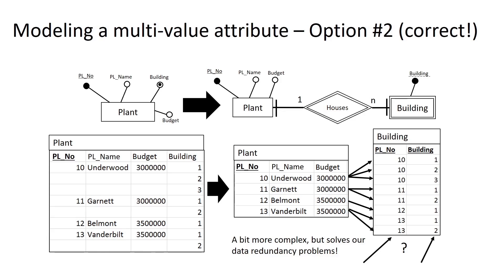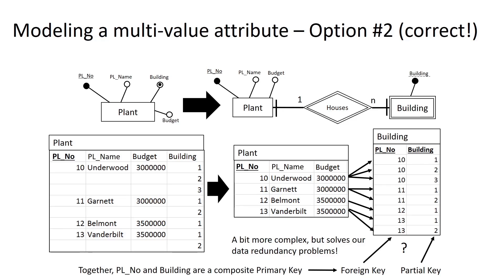If we want to update the budget for this plant from 3 million to 5 million, it's just one value that we have to update and that doesn't impact anything about our buildings. In this case, plant number by itself is a foreign key that refers to the primary key plant number in the plant table, and building by itself is a partial key, indicated in our ERD with a dotted underline. Together, this foreign key and partial key make up a composite primary key for this building entity. We'll talk more about what a foreign key is and the foreign key constraint in a future module.